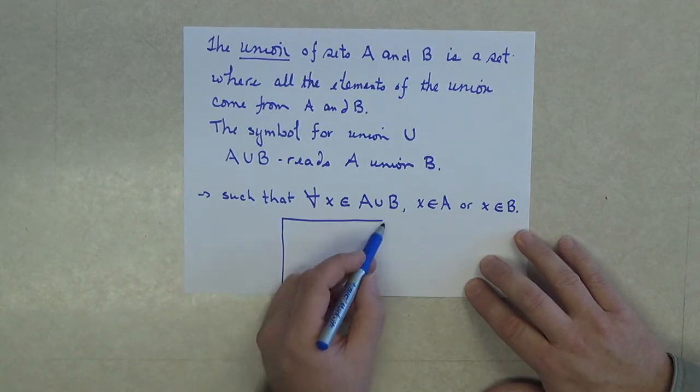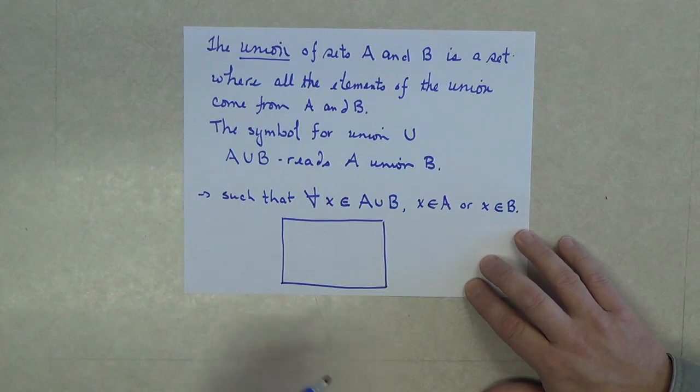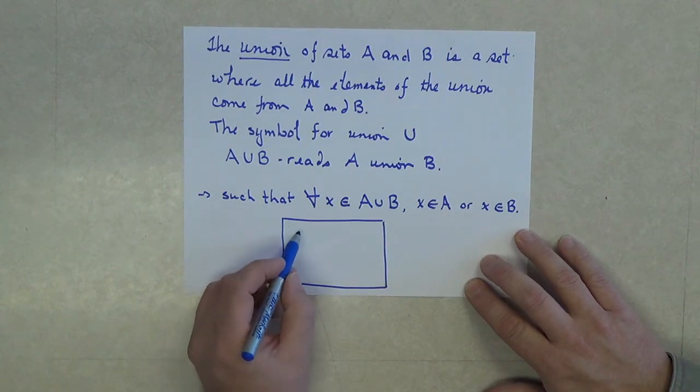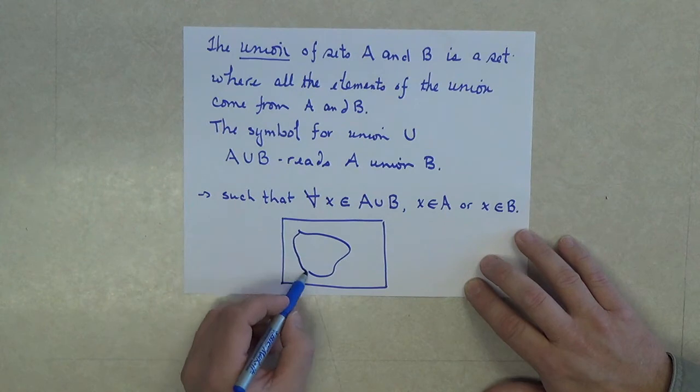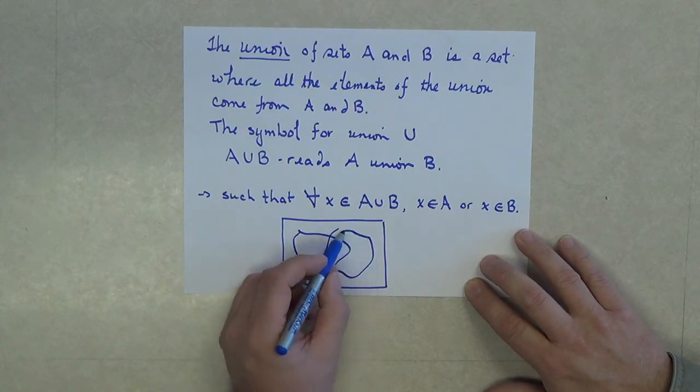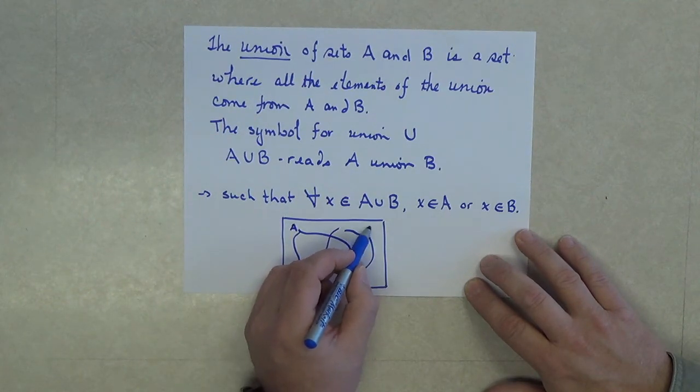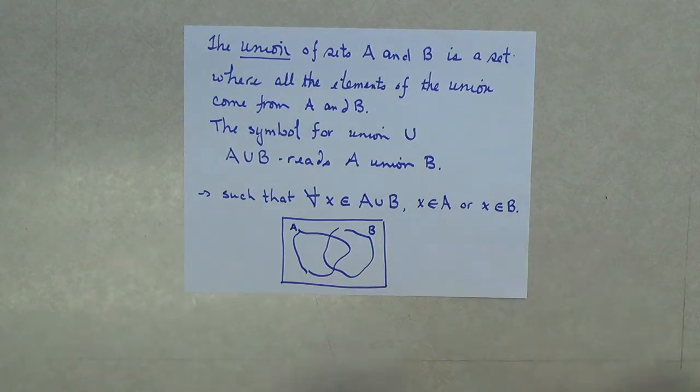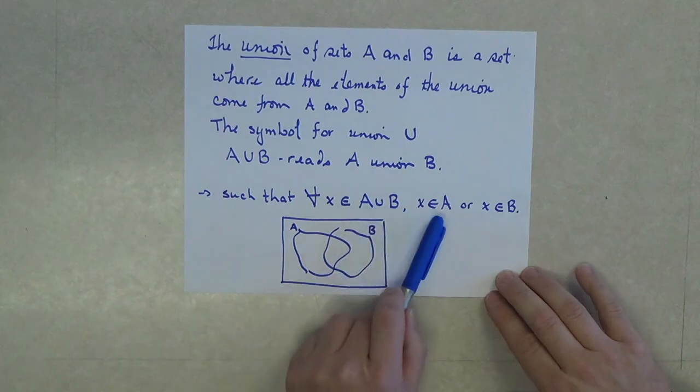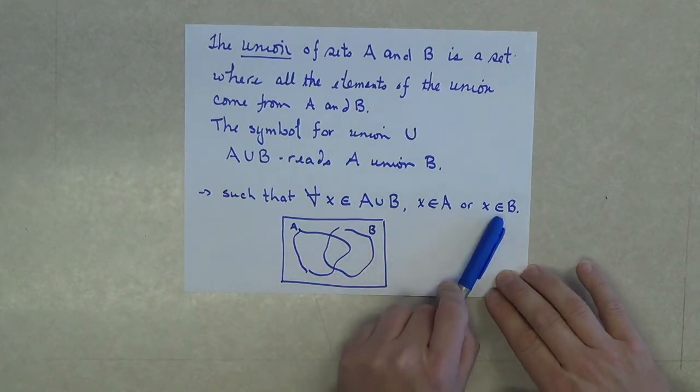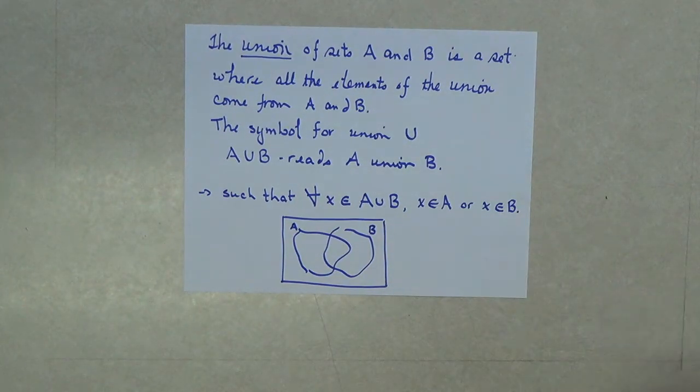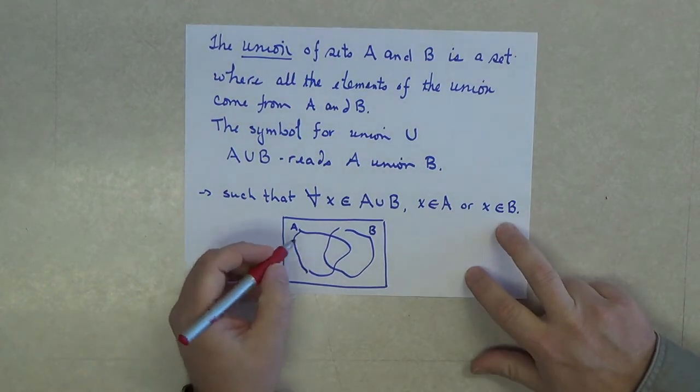Suppose we have a universe, and in this universe I have two sets, call them A and B. The elements that belong to the union come from A or B. It doesn't say and, it says or, so I could be from one or the other.